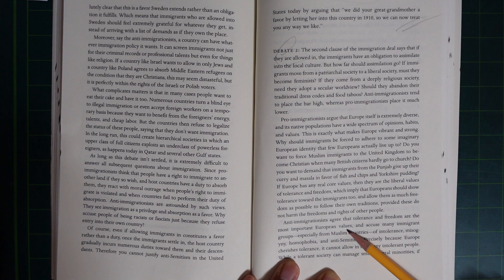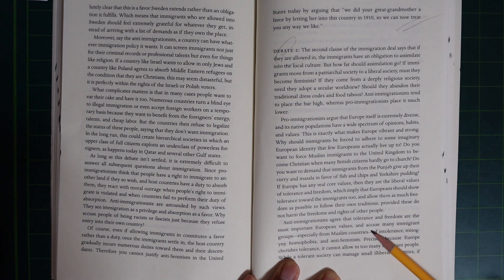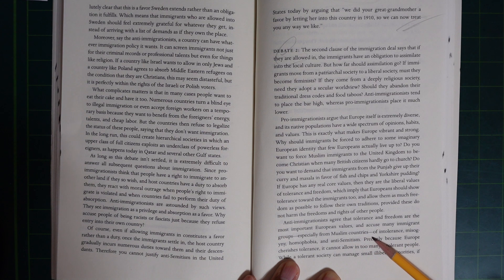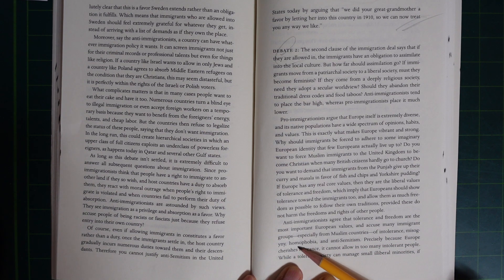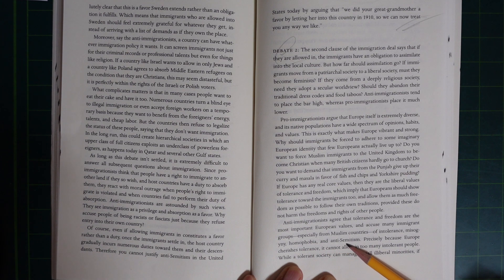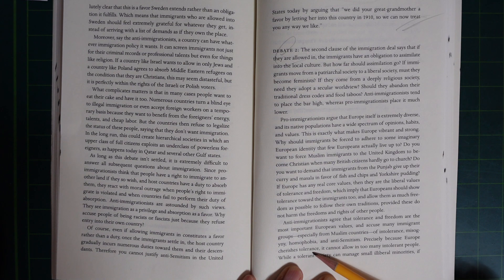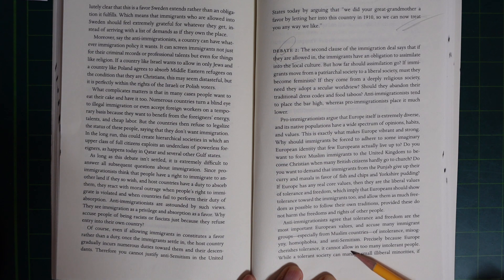Anti-immigrationists agree that tolerance and freedom are the most important European values and accuse many immigrant groups, especially from Muslim countries, of intolerance, misogyny, homophobia, and anti-Semitism. Precisely because Europe cherishes tolerance, it cannot allow too many intolerant people in.